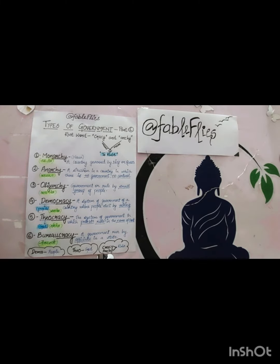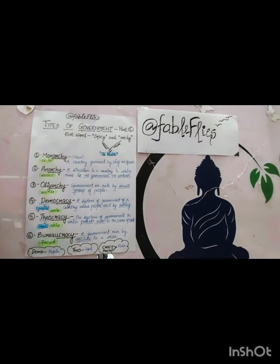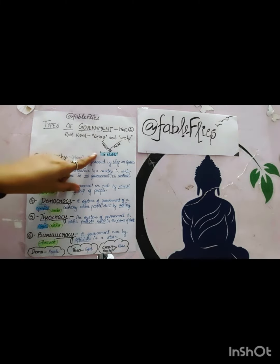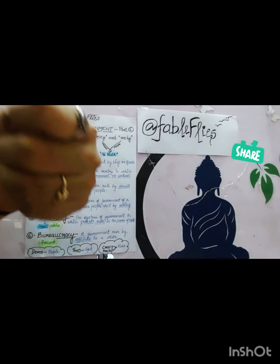So students, we have learnt four root words. Number one: 'demo', which means people, where the word was democracy. Next root word: 'theo', which means god, where we learnt theocracy. And 'cracy' and 'archy' mean to rule. Next time wherever you find 'archy' or 'cracy', try to relate it with rule or a kind of government. I hope you have understood. Thank you — please like and subscribe.